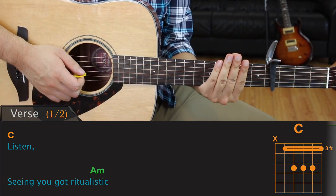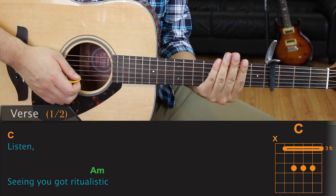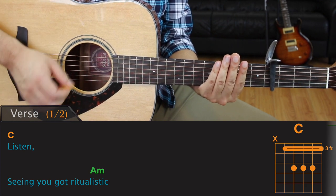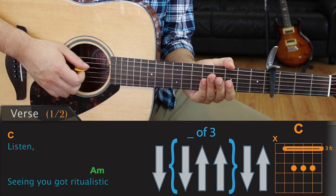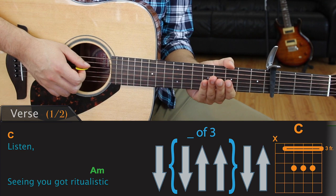The strumming pattern that I'm about to show you is just one of many that fit with the song. There are certainly plenty of other ones that you can use though. After learning this pattern, feel free to experiment with some of your own and use whatever you think sounds best. Alright, we're going to start with a down strum, and then we'll play a down, up, up three times, and finally we'll finish off with a down, up.